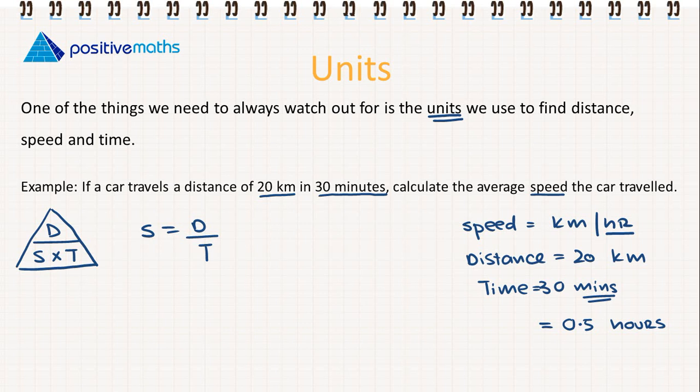Now that we have our distance in kilometres and our time in hours, we can now go back and use our formula. Speed is equal to distance, so that's 20 kilometres, divided by time, so that's 0.5. So our speed is going to be 40 kilometres per hour.